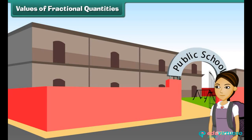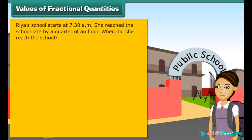Here is one more example. Riyaz's school starts at seven thirty A.M. She reached the school late by a quarter of an hour. When did she reach the school?